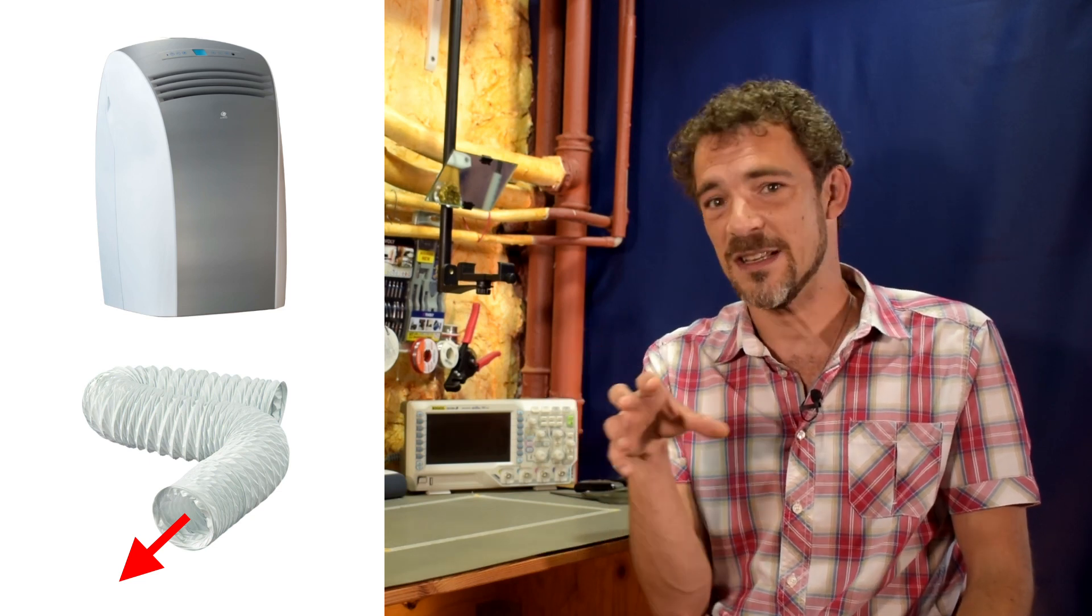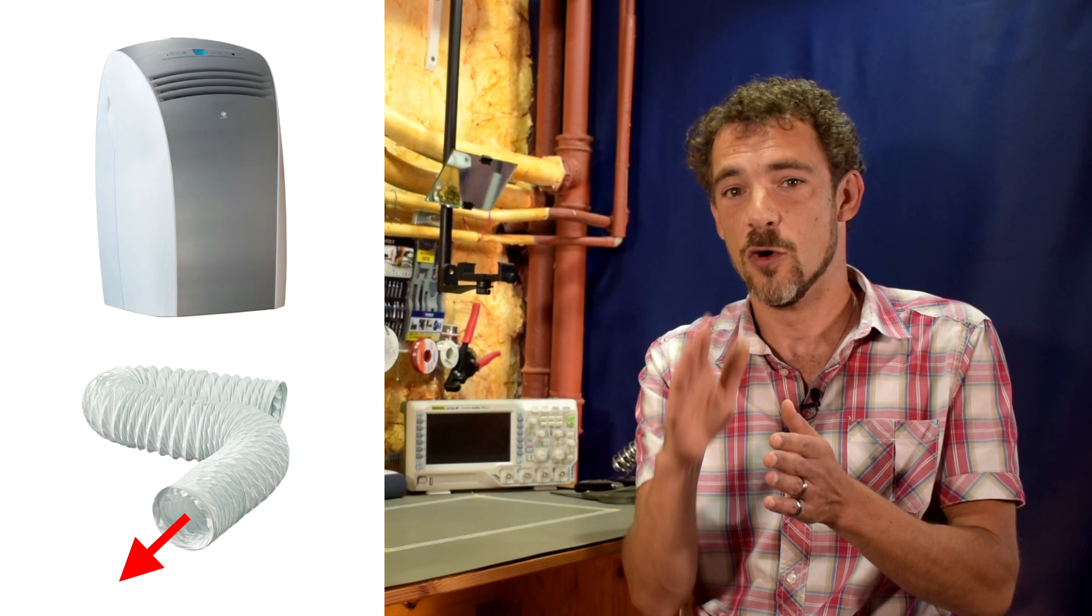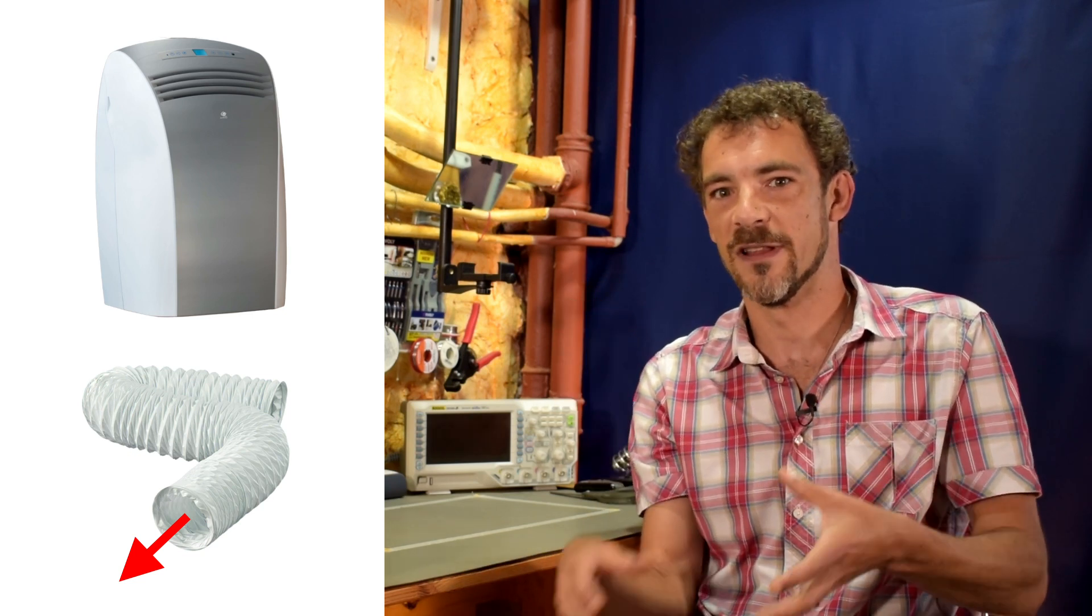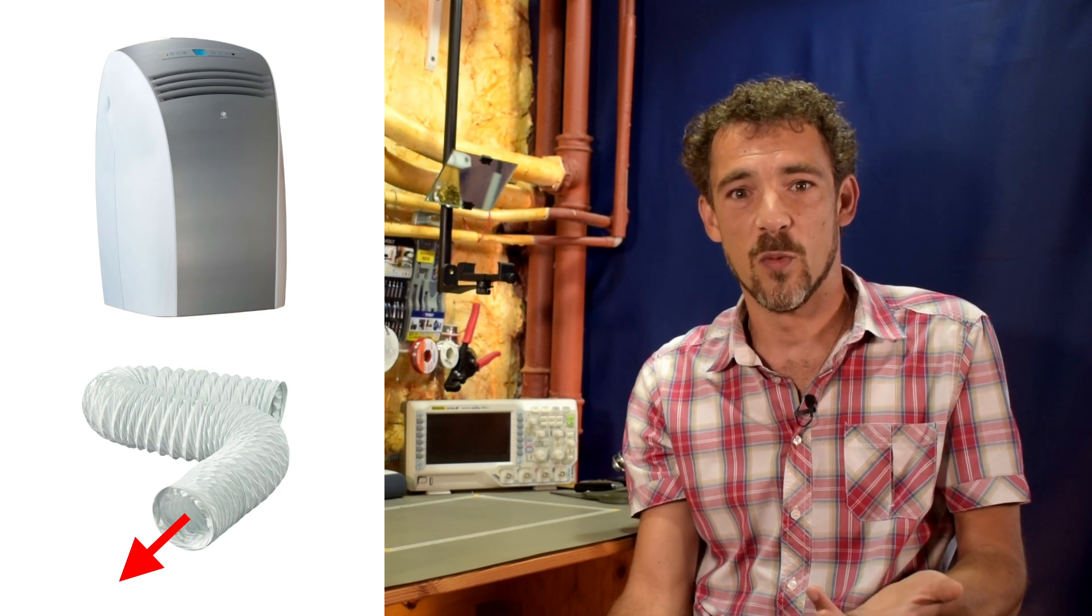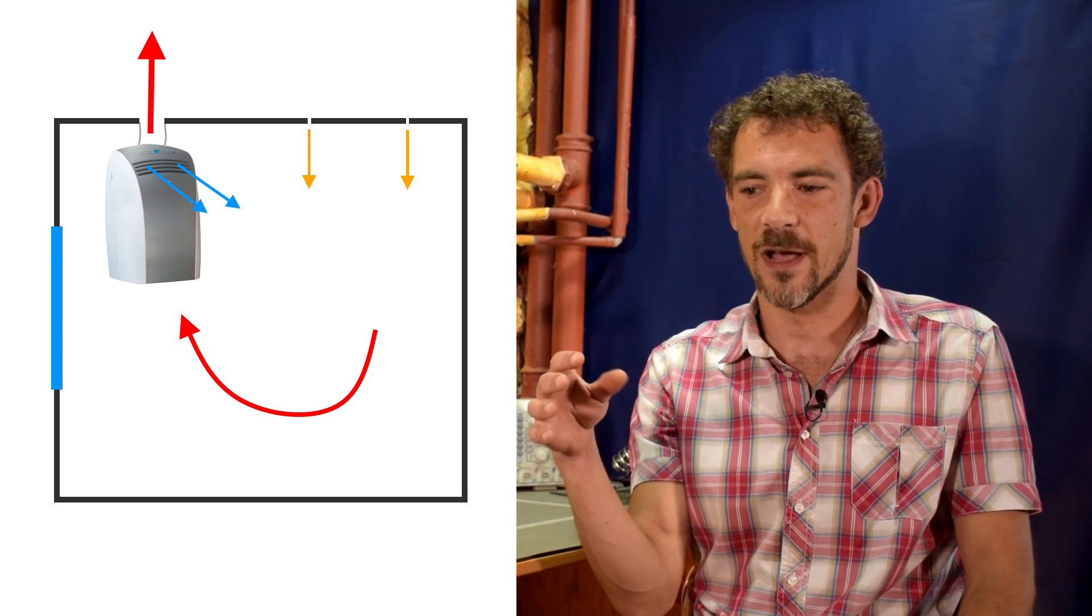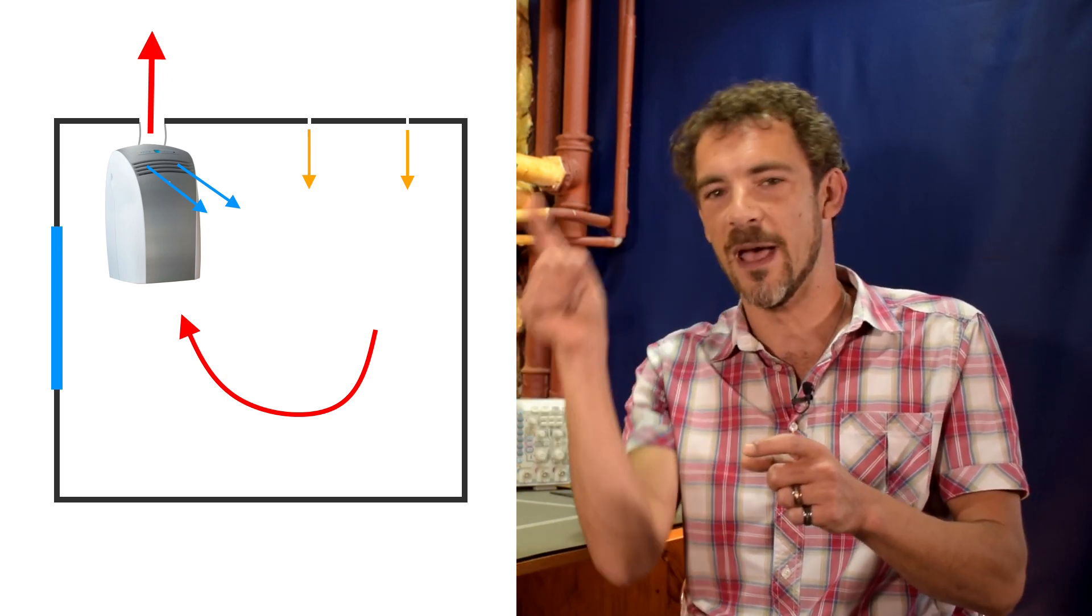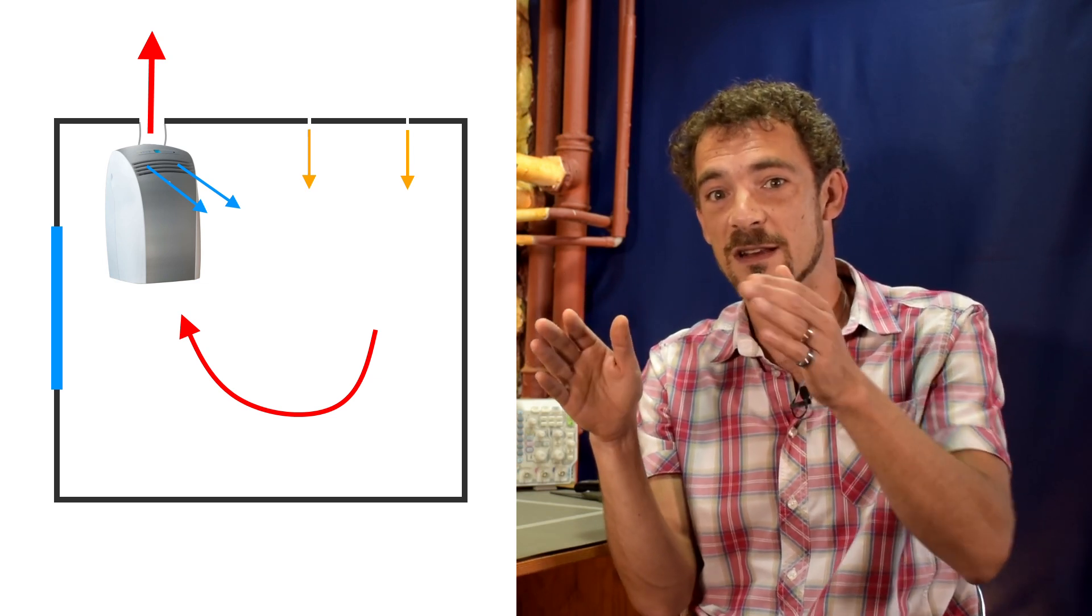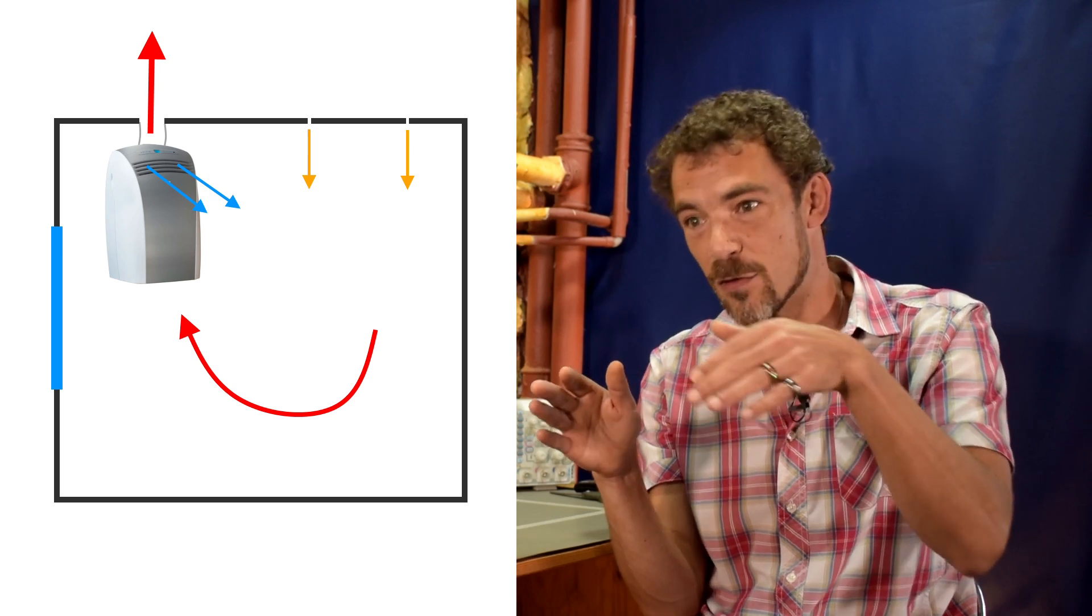But of all the air that it sucks into the unit, a portion of that air it takes and it cools it and blows it back into the room. The rest of the air is actually used for the remove the heat stage. And it actually is vented out a flexible conduit, either through a slightly open window that you've sealed off, or many times people just drill a hole in the wall and have a vent with a pipe sticking through. So the problem with monoblock air conditioners is that they create a negative pressure situation.